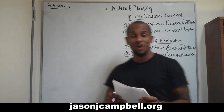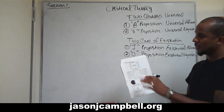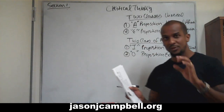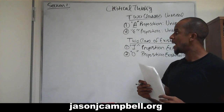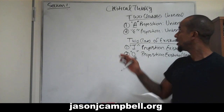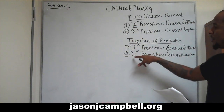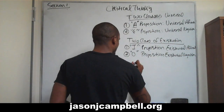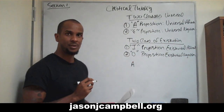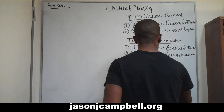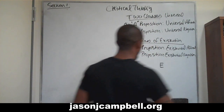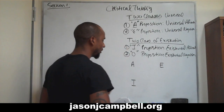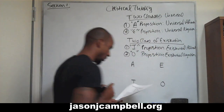Now we're going to go back to the diagram on page three. We're going to place each of these propositions in a particular spot. The A proposition goes in the upper left, E in the upper right, I in the lower left, and O in the lower right.